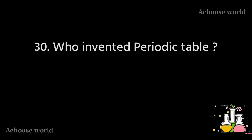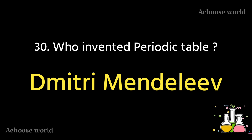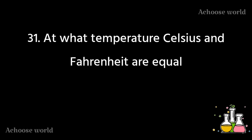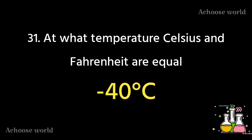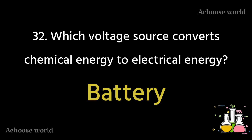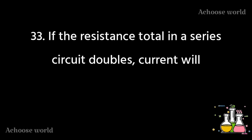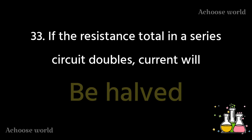Who invented the periodic table? Dmitri Mendeleev. At what temperature are Celsius and Fahrenheit equal? Minus 40 degrees. Which voltage source converts chemical energy to electrical energy? A battery. If the resistance total in a series circuit doubles, the current will be halved.